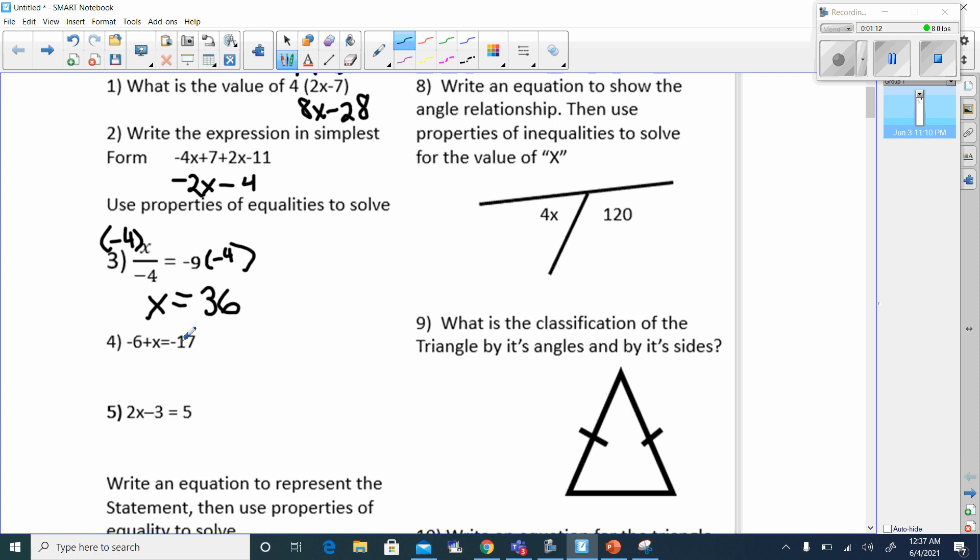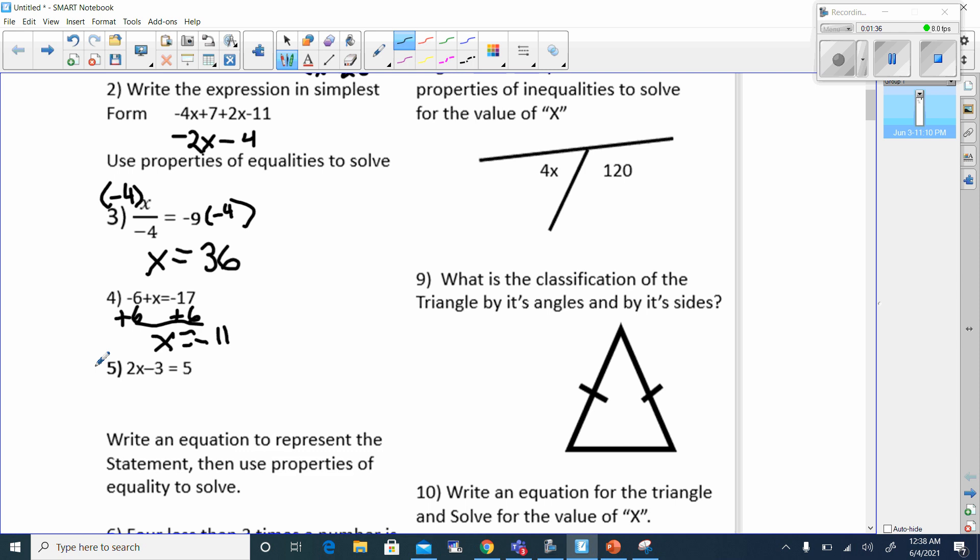Number 4, negative 6 plus x equals negative 17. I'll add 6 to this side, which means I'll add 6 to this side. That means x is going to be equaling negative 11. And we've got number 5, 2x minus 3, we're going to add 3 to both sides. That's going to give me 2x equals 8, and I'll divide by 2 on both sides. 8 divided by 2 is 4, so x has to equal 4.